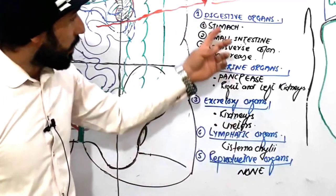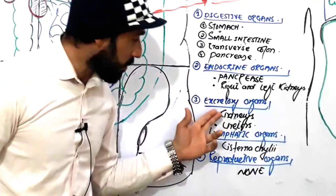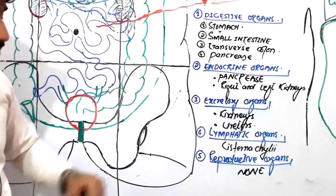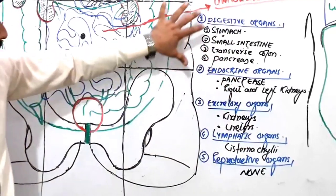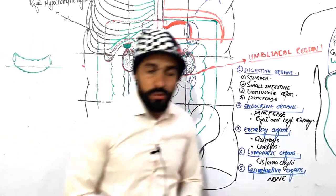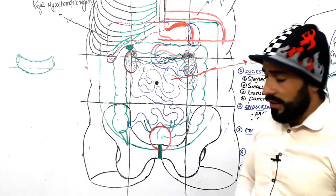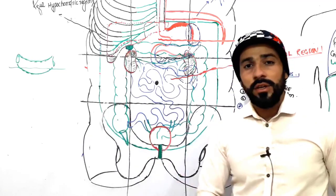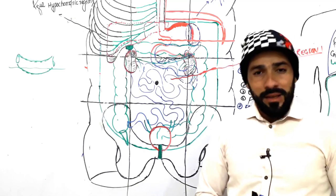So this was about the organs present in the umbilical region: the digestive organs, the endocrine organs, the excretory organs, the lymphatic organs, and the reproductive organs. You can watch and learn and remember that these organs are present in your umbilical region. See you in the next lecture regarding the organs present in the right iliac region. Till then, Allah Hafiz.